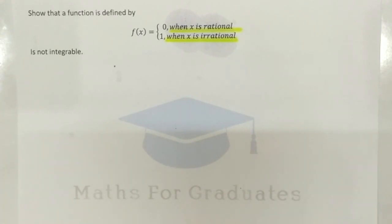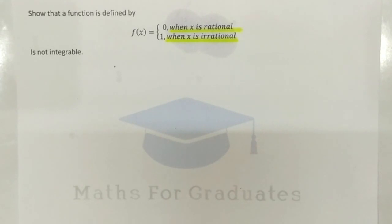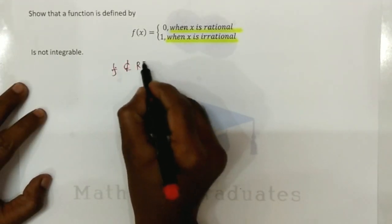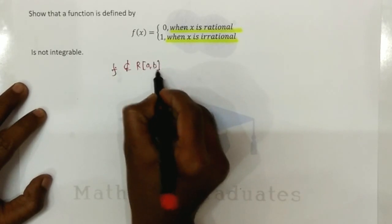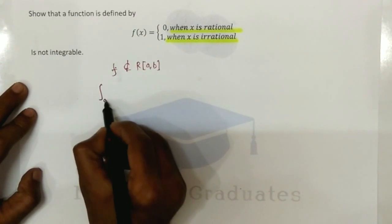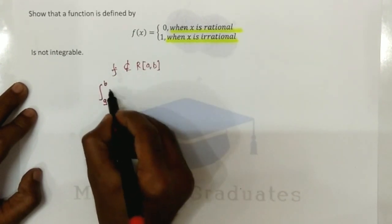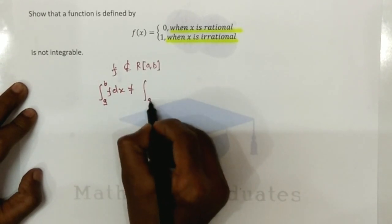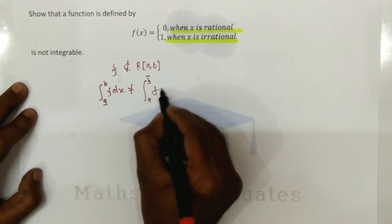We have a function defined as follows: it takes value 0 when x is rational and it takes value 1 when x is irrational. We have to show that f is not Riemann integrable. For this, from the condition of integrability, the lower Riemann integral must not be equal to the upper Riemann integral.